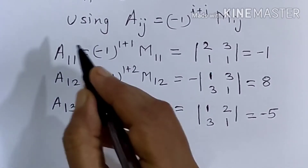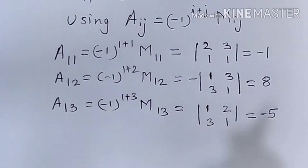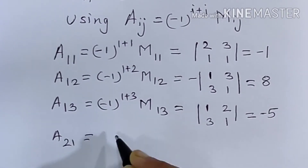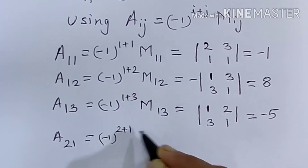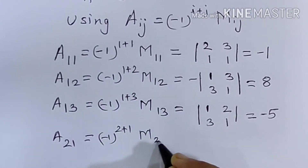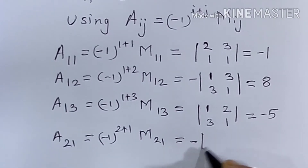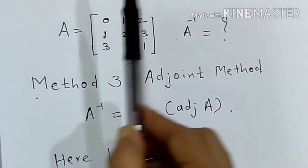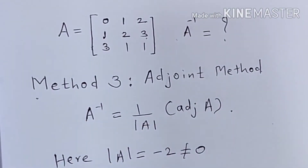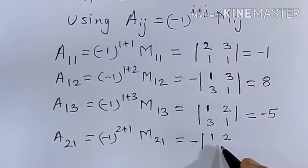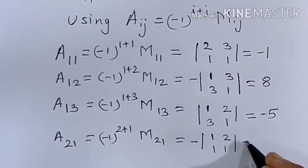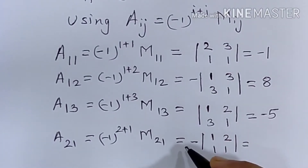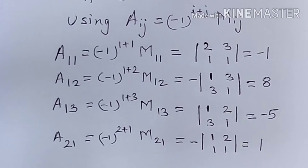The first row of cofactors — A11, A12, A13 — is now complete. Next, A21 is equal to minus 1 raised to 2 plus 1, into M21, giving minus of the determinant. Deleting the second row and first column gives the determinant with elements 1, 2, 1, 1, which equals 1 minus 2, that is minus 1. So minus of minus 1 is plus 1.